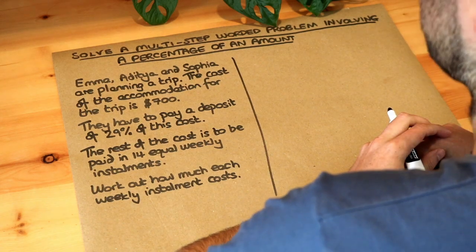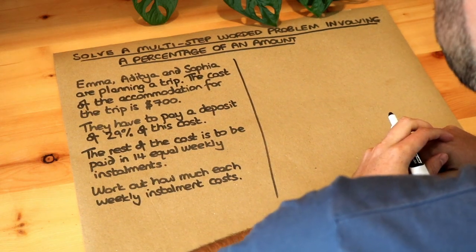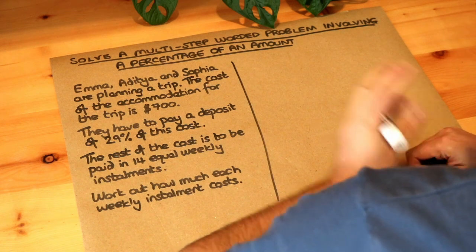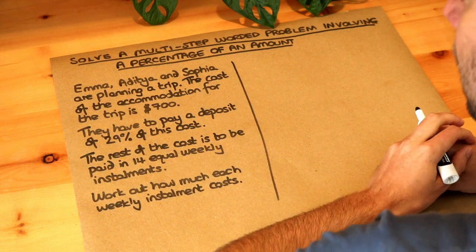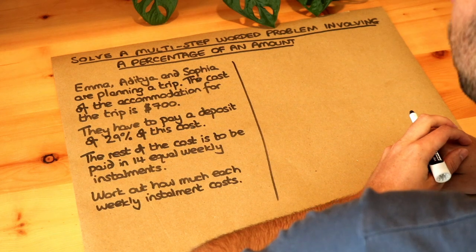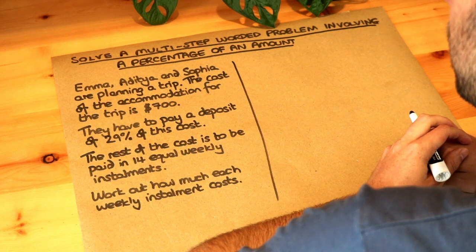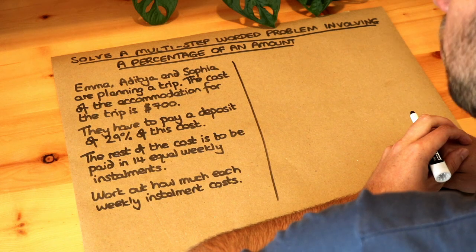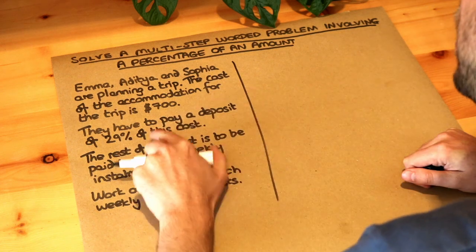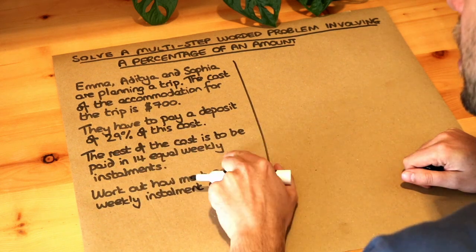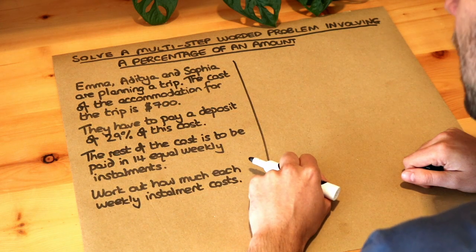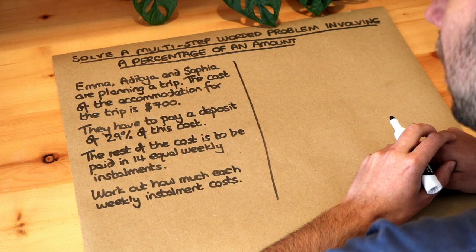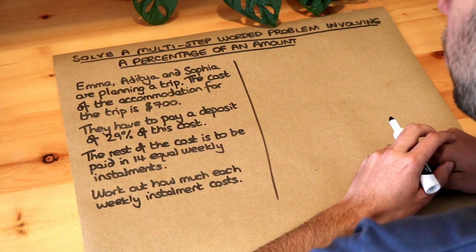Hello and welcome to this Dr Ross video on solving a multi-step worded problem involving a percentage of an amount. Let's read the question. Emma, Aditya and Sophia are planning a trip. The cost of the accommodation for the trip is $700. They have to pay a deposit of 29% of this cost. The rest of the cost is to be paid in 14 equal weekly installments. Work out how much each weekly installment costs.